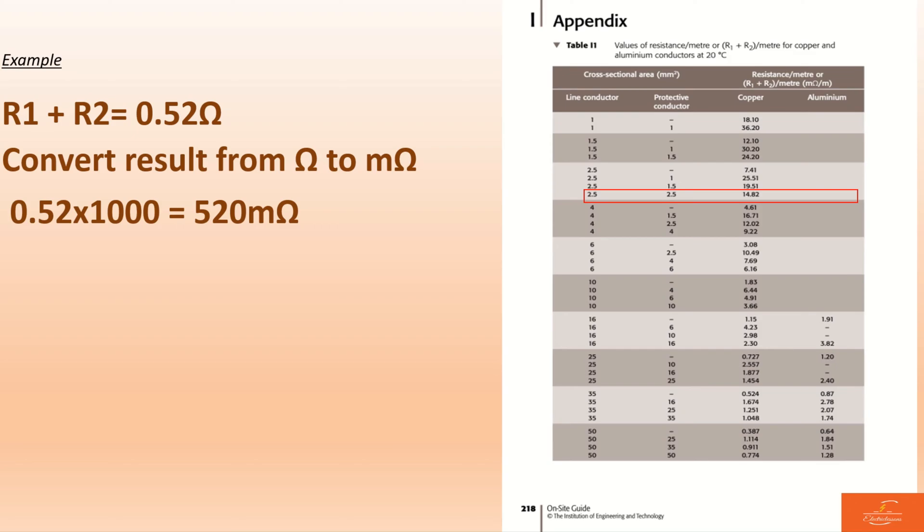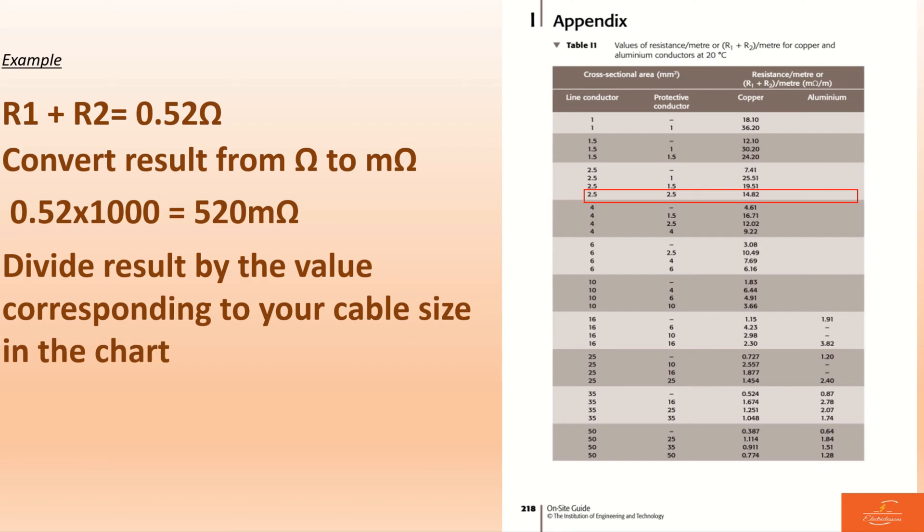Now what we need to do is divide the result by the value corresponding to your cable size in the chart. In our example, what is the value corresponding to a 2.5 cable line conductor and 2.5 protective conductor? We have 14.82. Now what you do is literally 520 divided by 14.82. You'll have 35 and some other values. We just need to approximate.